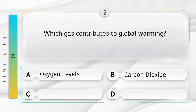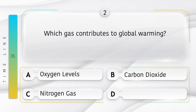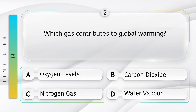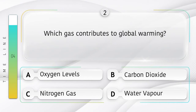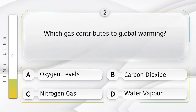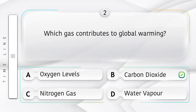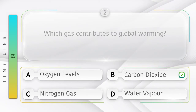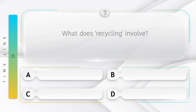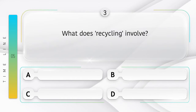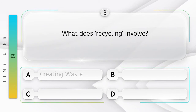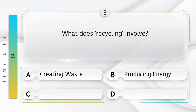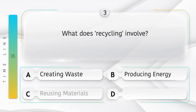Which gas contributes to global warming? Option A: oxygen. Option B: carbon dioxide. Option C: nitrogen gas. Option D: water vapor. Answer is option B: carbon dioxide.